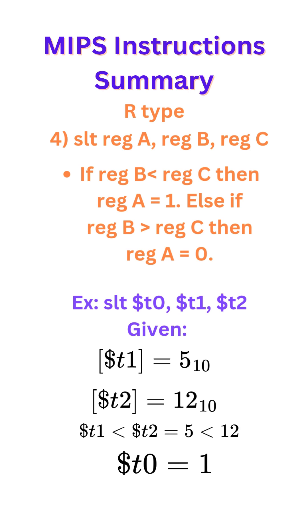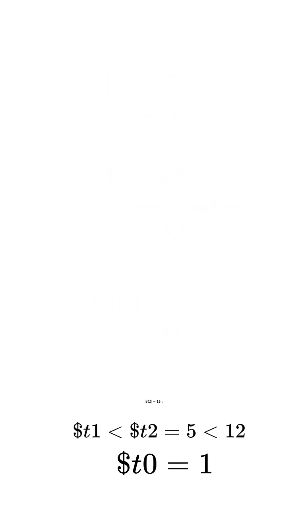Example: SLT T0, T1, T2. We're given the contents of T1 and T2, so in this case T1 is less than T2 because 5 is less than 12, so register T0 would be 1.